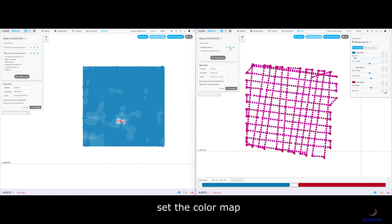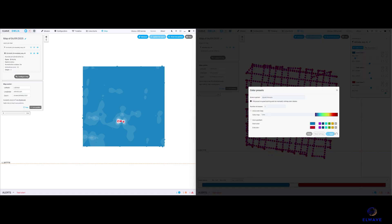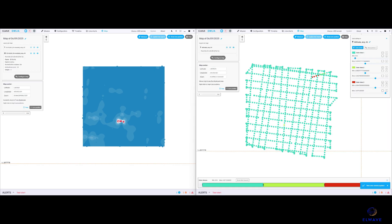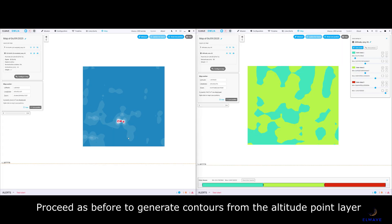Set the color map. Proceed as before to generate contours from the altitude point layer.